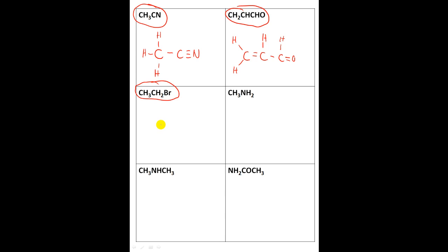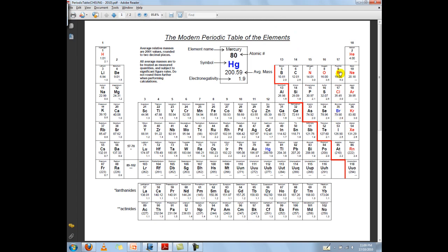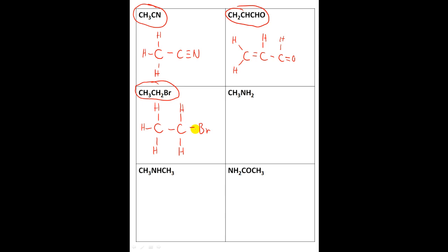Next question. The answer is CH₃ CH₃ CH₂ CH₂ bonded to a bromine. Bromine should have only seven valence electrons because it's in group 7A, and because it has seven valence electrons it needs one more to achieve stability. So it can only make one bond — and there's that one bond.